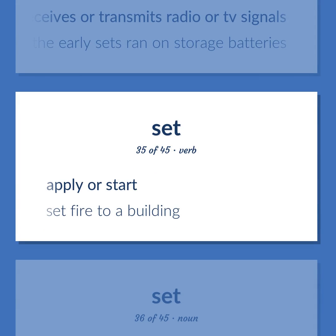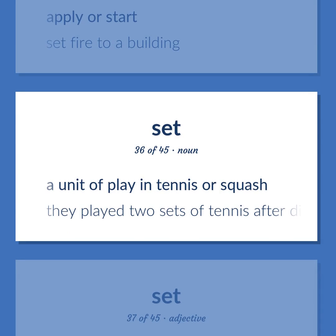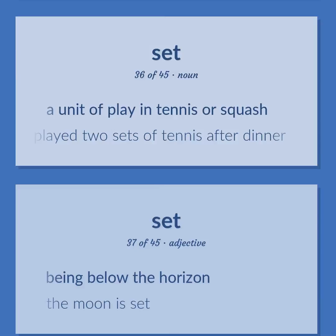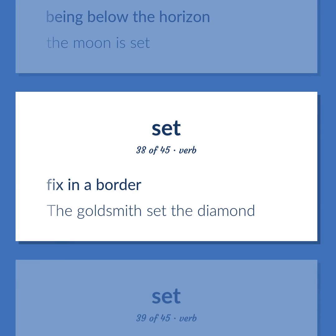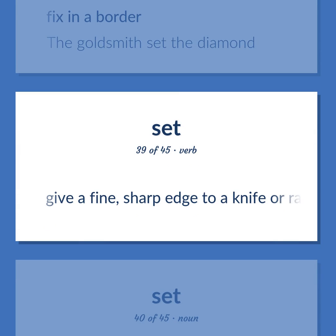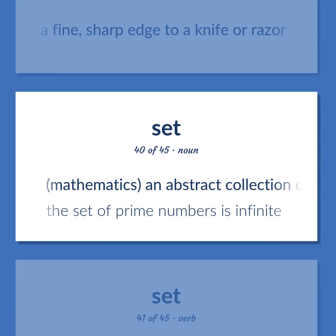SET: Apply or start — set fire to a building. A unit of play in tennis or squash — they played two sets of tennis after dinner. Being below the horizon — the moon is set. Fix in a border — the goldsmith set the diamond. Give a fine, sharp edge to a knife or razor. Mathematics: an abstract collection of numbers or symbols — set the set of prime numbers as infinite.